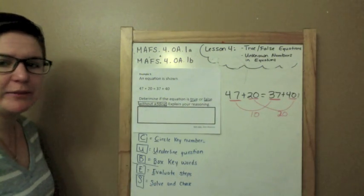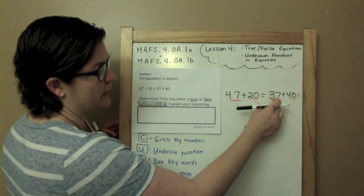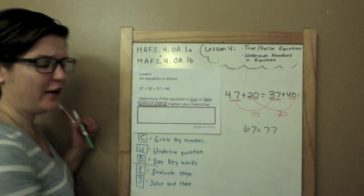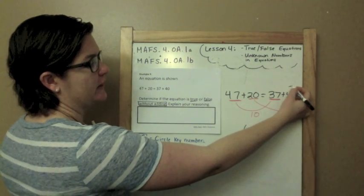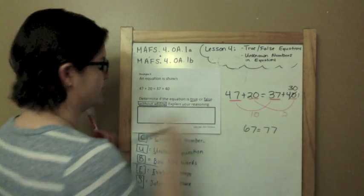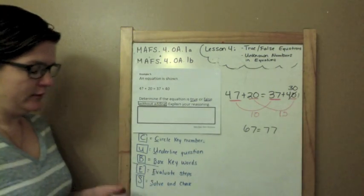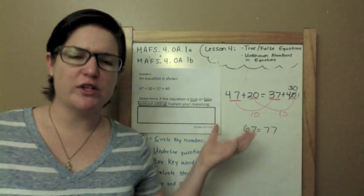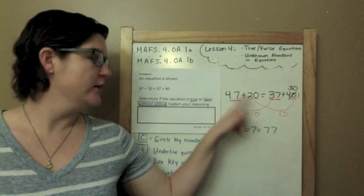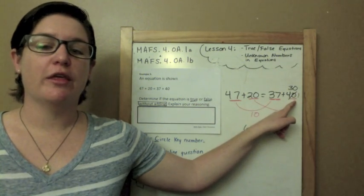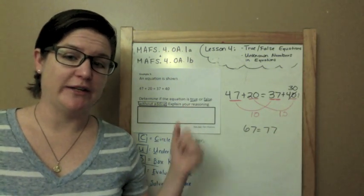I know it says to do it without adding, but let me also show you how this works. So 47 plus 20 would be 67. 37 plus 40 would be 77. Do you see how this side is 10 more? So in order for this to work, this 40 should be a 30 because then we would have a difference of 10. If you are totally lost, go back and watch that again until you see what I'm doing here. 47 is 10 away from 37, so the 20 needs to be 10 away from the 30. Check it with your regular adding.